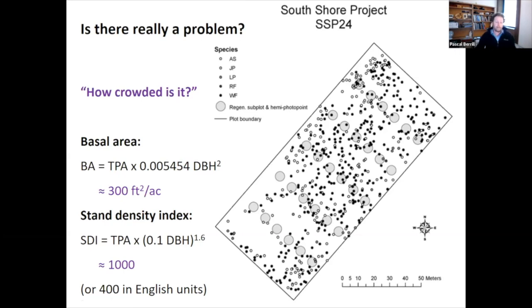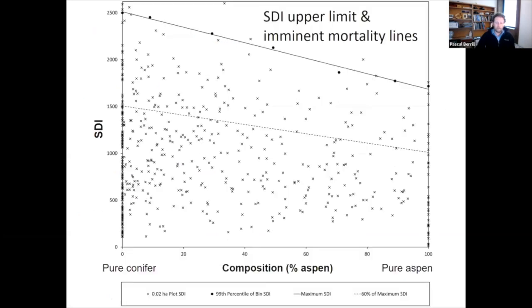In this particular stand on the south shore we have an SDI of 1000 in metric units, or 400 in English units. The black dots are conifers, so it looks pretty crowded, but it's nice to have a number.